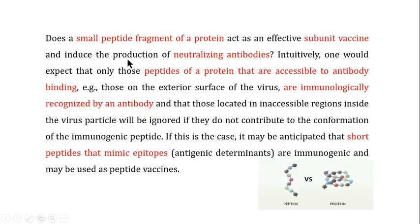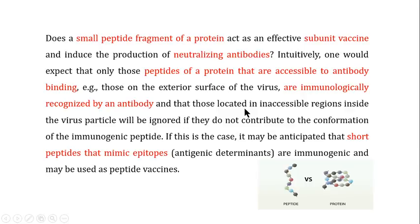The question is: can a small peptide fragment of a protein act as an effective subunit vaccine and induce the production of neutralizing antibodies? Only those peptides accessible to antibody binding — those present on the exterior surface of the virus or protein that are immunologically recognized — are relevant. Peptides present inside the virus particle or interior of the protein are ignored if they do not contribute to the conformation of the immunogenic peptide.